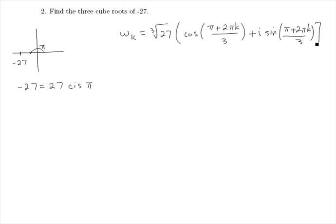We're going to find our three solutions by letting k equal 0, 1, and 2. So if you start with 0, the cube root of 27 is 3. And then we have cosine of pi over 3 plus i sine of pi over 3. So we get 3 times 1 half plus i radical 3 over 2 as our first root.